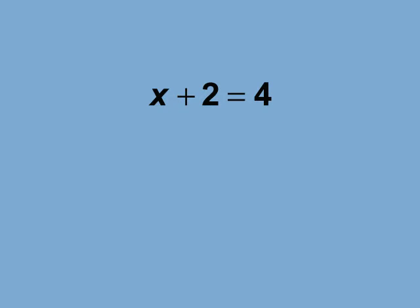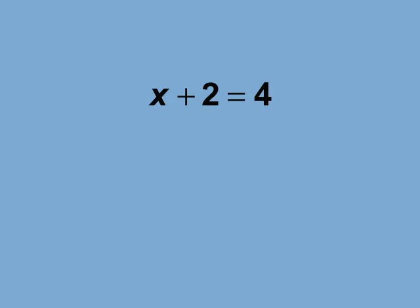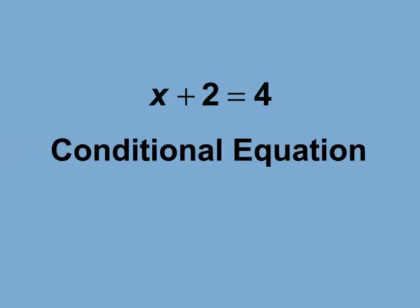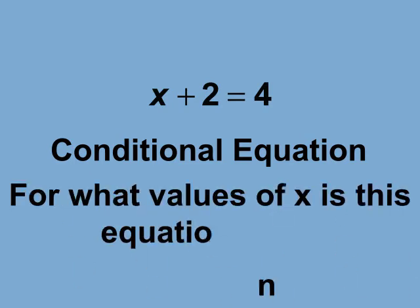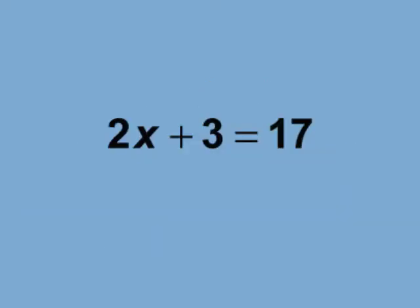When you solve an equation, what you are doing is finding the value or values of x that make an equation true. Before solving it, the equation is what's called a conditional equation, which is another way of asking: for what values of x is this equation true? Here's an example. The equation 2x plus 3 equals 17 is a conditional equation. The equation is true for only one value of x.